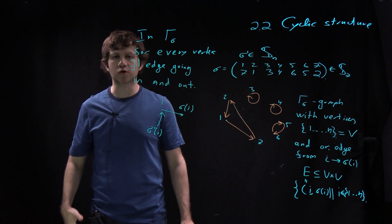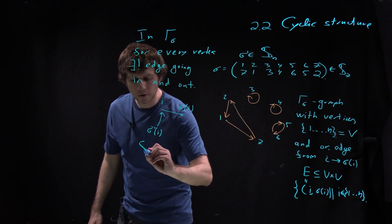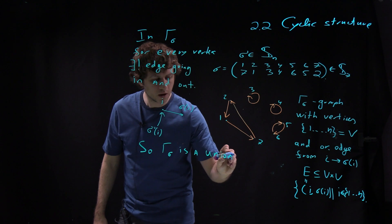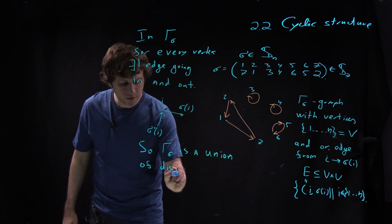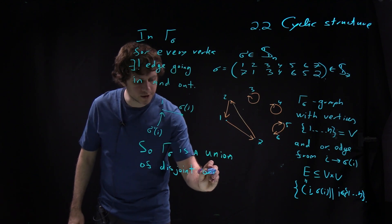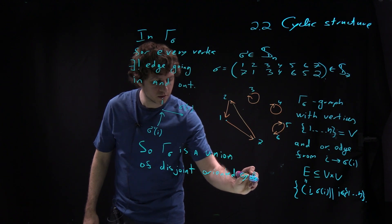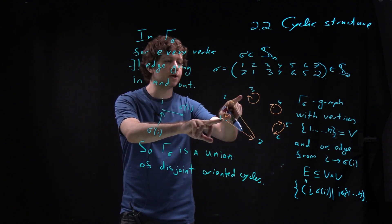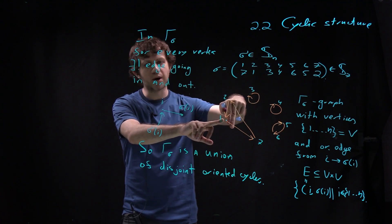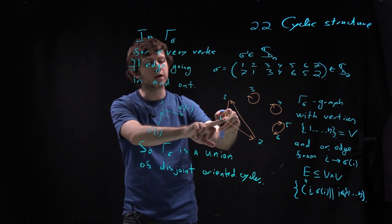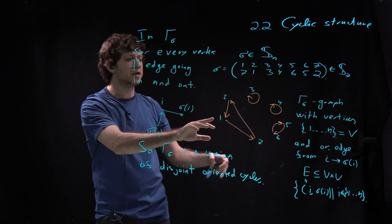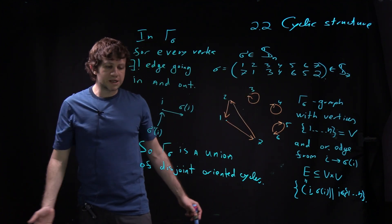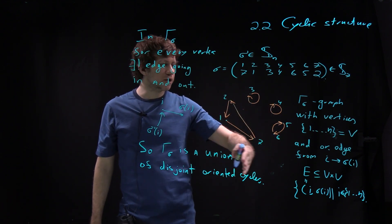As in lecture 1.6 where we talked about Lagrange's theorem, we can conclude that gamma sigma is a union of disjoint oriented cycles. The argument is: take some point, go by an outgoing edge, and continue. Since the set is finite, at some moment you will come back to your starting point — it can only be the first vertex, otherwise you contradict uniqueness of incoming edges — and so you see a cycle.